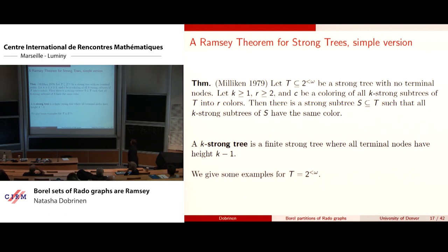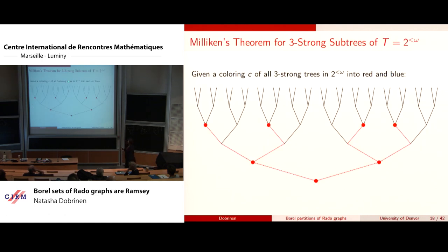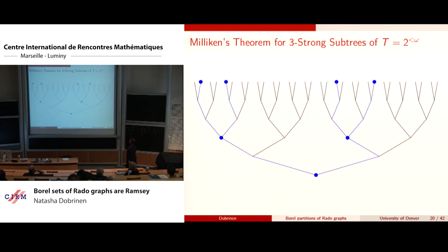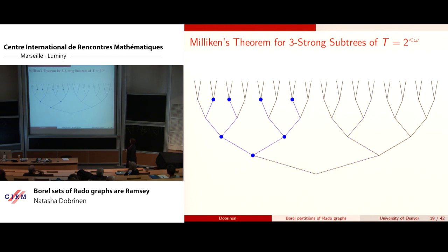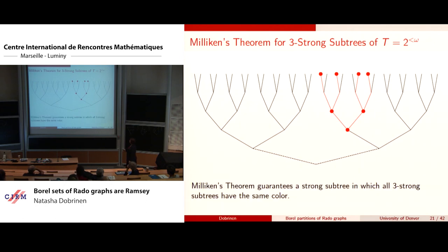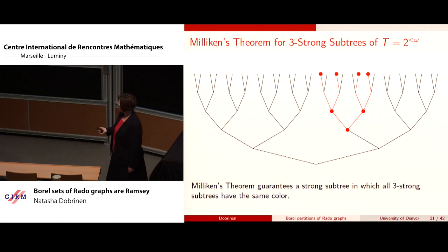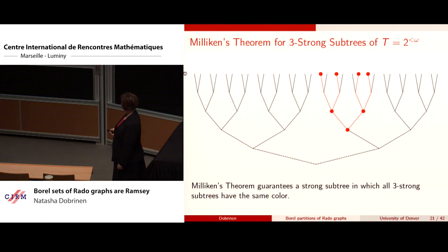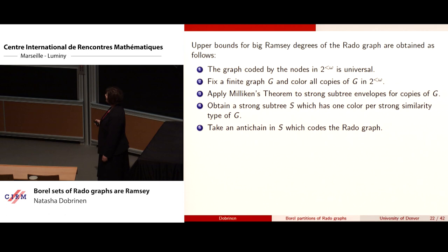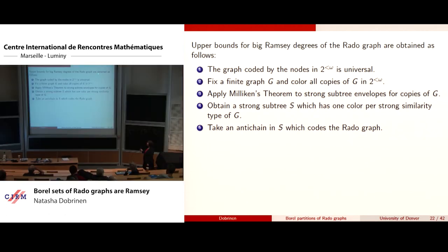For example, given a coloring of three-strong trees into red and blue, you can find an infinite tree isomorphic to 2^{<ω} where all three-strong subtrees have the same color. This was used to find upper bounds for big Ramsey degrees in the Rado graph: you code the graph using nodes, use passing numbers to code edge/non-edge, embed the Rado graph into the tree, apply Milliken's theorem once per strong similarity type, getting one color per type.